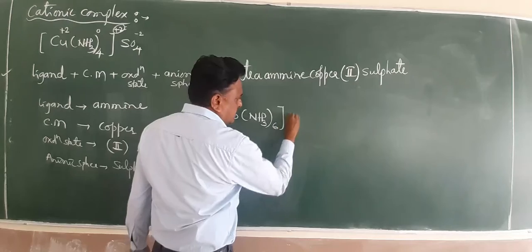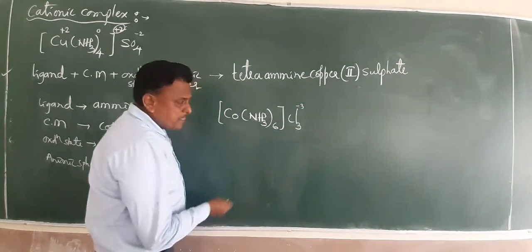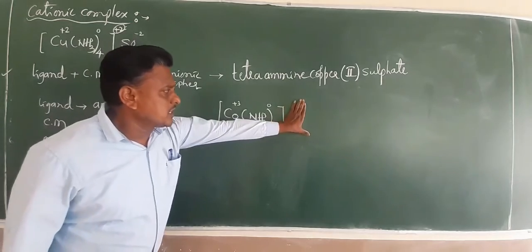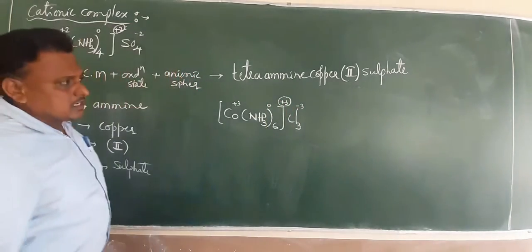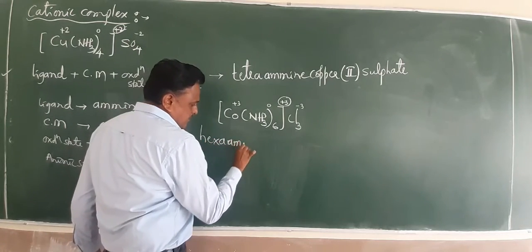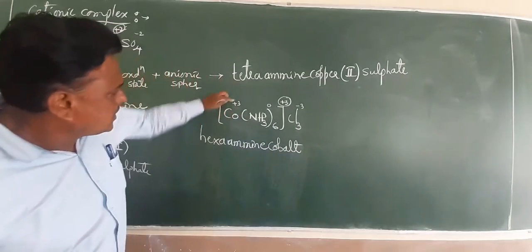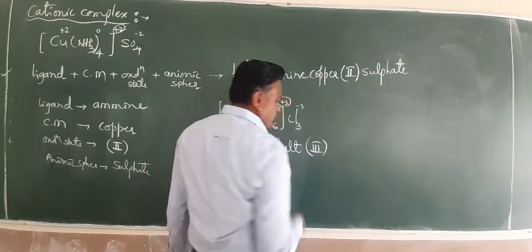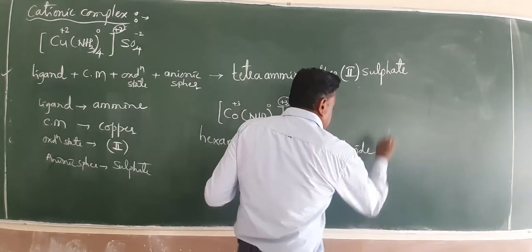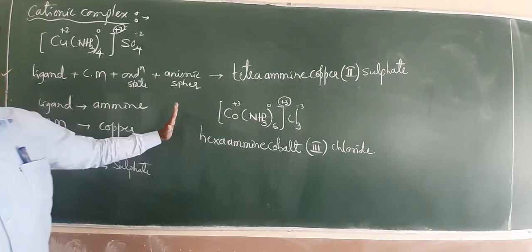Next example: [Co(NH3)6]Cl3. Here Cl3 gives minus 3, ammonia is 0 (neutral ligand), so cobalt is plus 3 — a cationic complex. The ligand ammonia appears 6 times: hexaamine. Central metal is cobalt. Oxidation state is 3. The outer anion is chloride. Name: hexaamminecobalt(III) chloride.